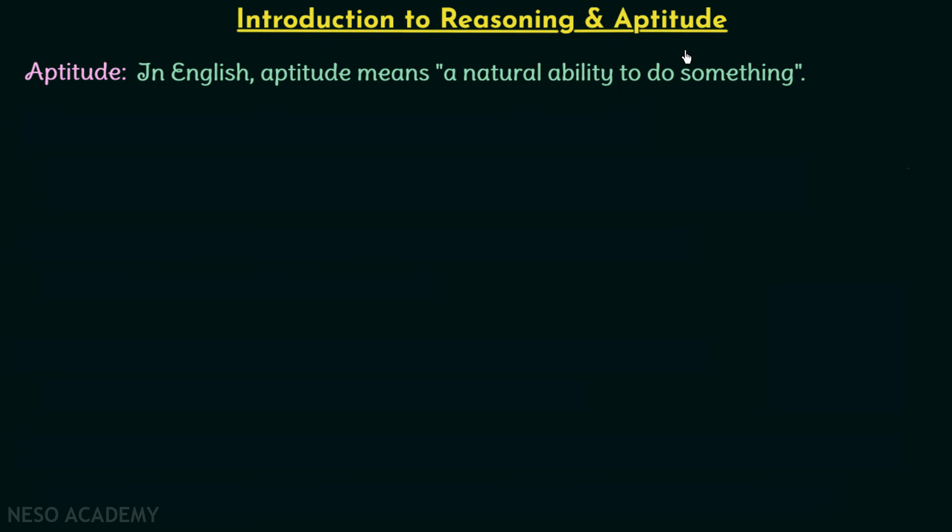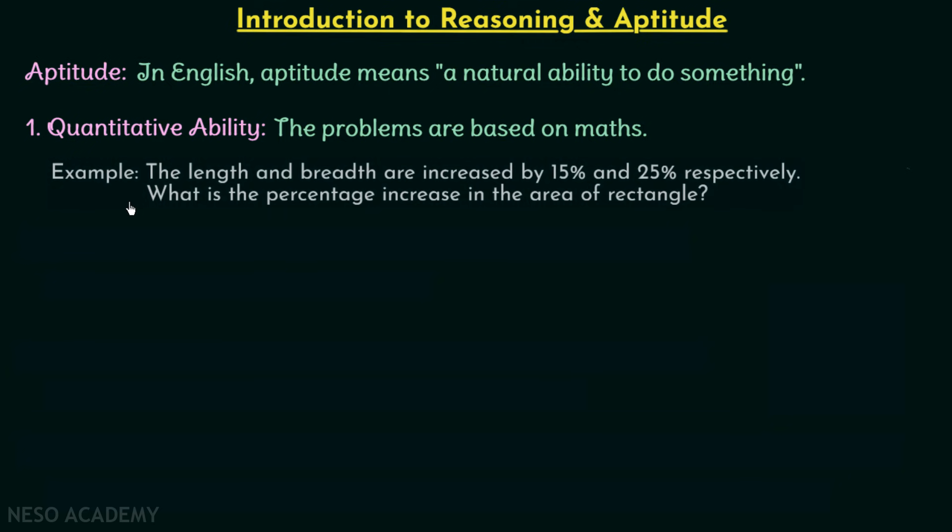Now we will move on to the subsections of reasoning and aptitude, or you can say different classes. The first one is Quantitative Ability. In this, the problems are based on mathematics. So whenever you have a problem which needs mathematical calculations, it will be under quantitative ability section. For example: the length and breadth are increased by 15% and 25% respectively. What is the percentage increase in the area of rectangle?